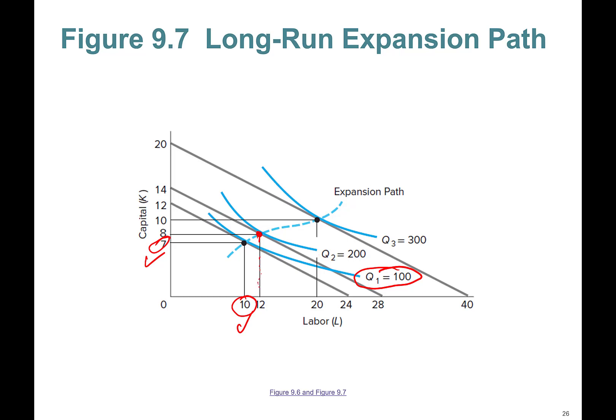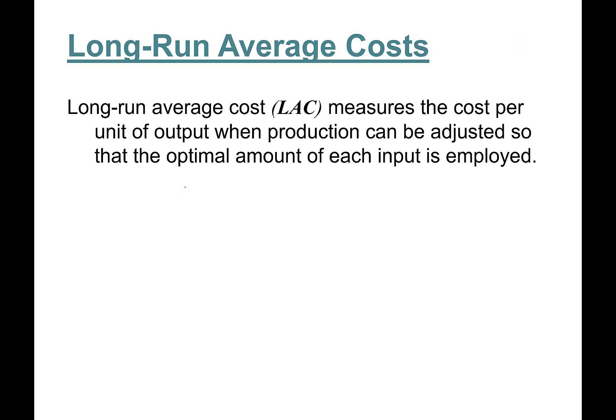For 200 units, the least costly way of producing requires 12 workers and 8 units of capital. The least costly way of producing 300 units is at this point, requiring 20 workers and 10 units of capital.